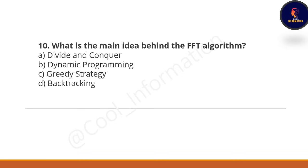Next question: what is the main idea behind the FFT algorithm? Option A is divide and conquer, Option B is dynamic programming, Option C is gradient strategy, and Option D is backtracking. The correct option is Option A — divide and conquer is the main idea behind the FFT algorithm.